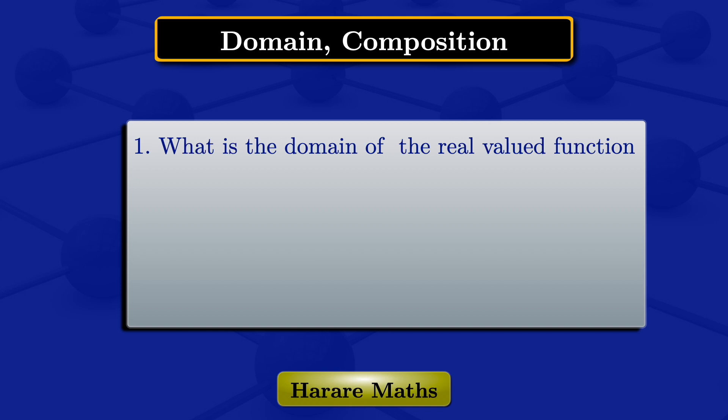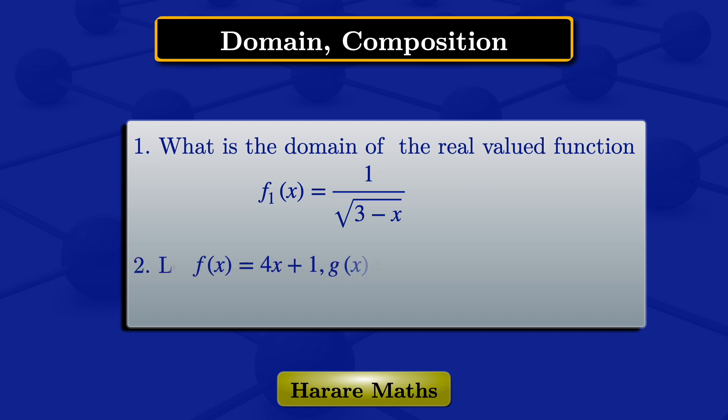In this video, I'm going to find the domain of the real-valued function f(x) = 1 divided by the square root of 3 minus x. For the second question, given the functions f(x) = 4x + 1 and g(x) = 2x² + 5x, I'm going to find the composition of g and f.